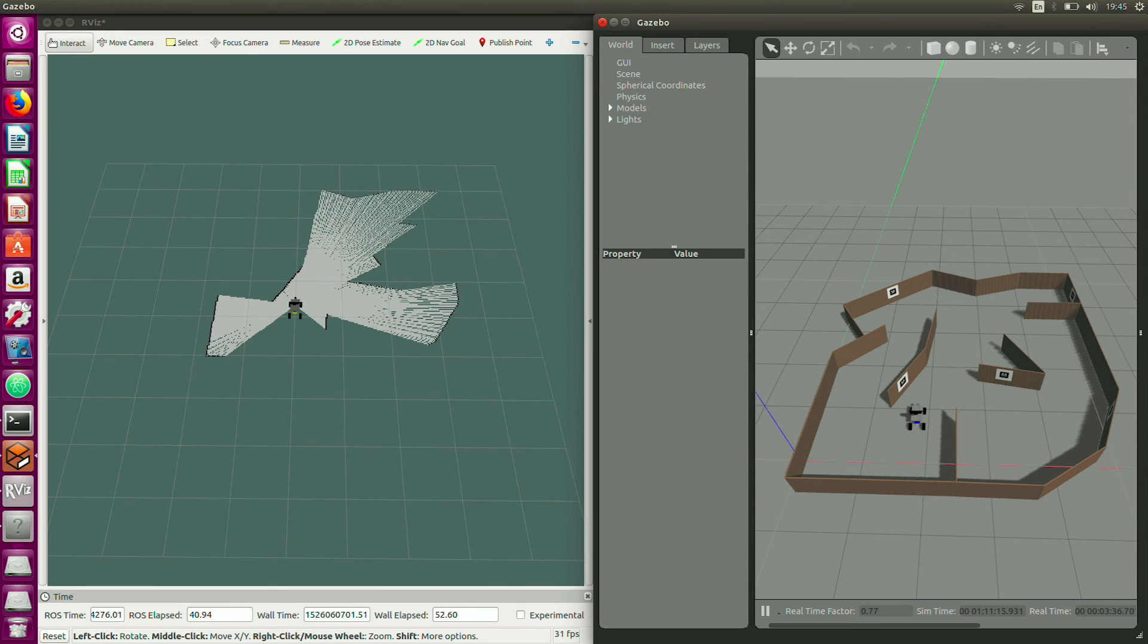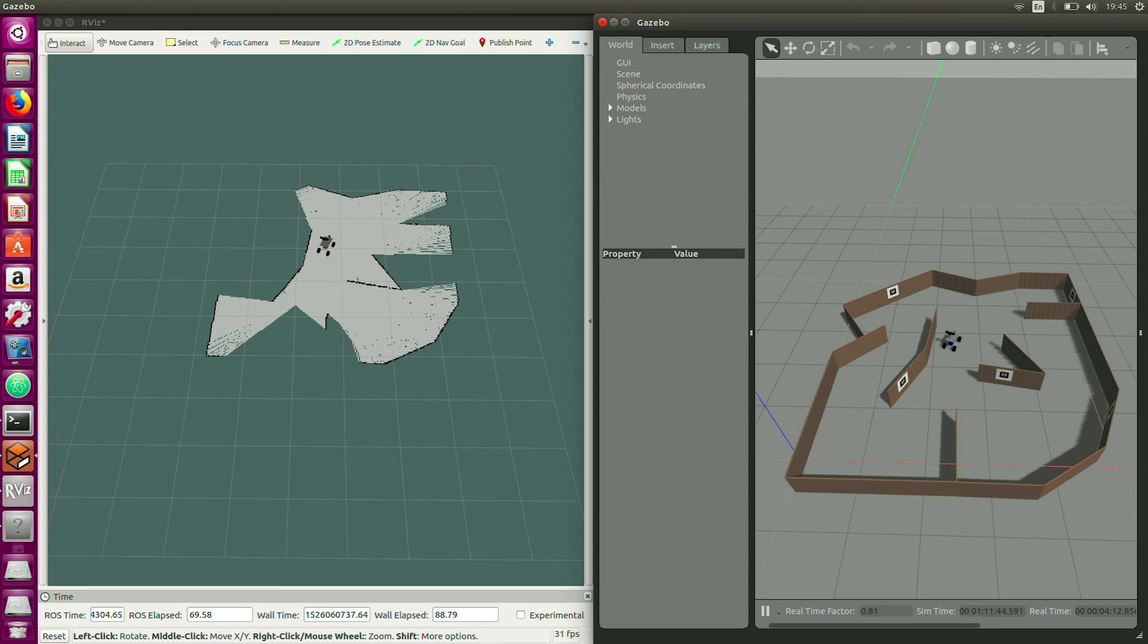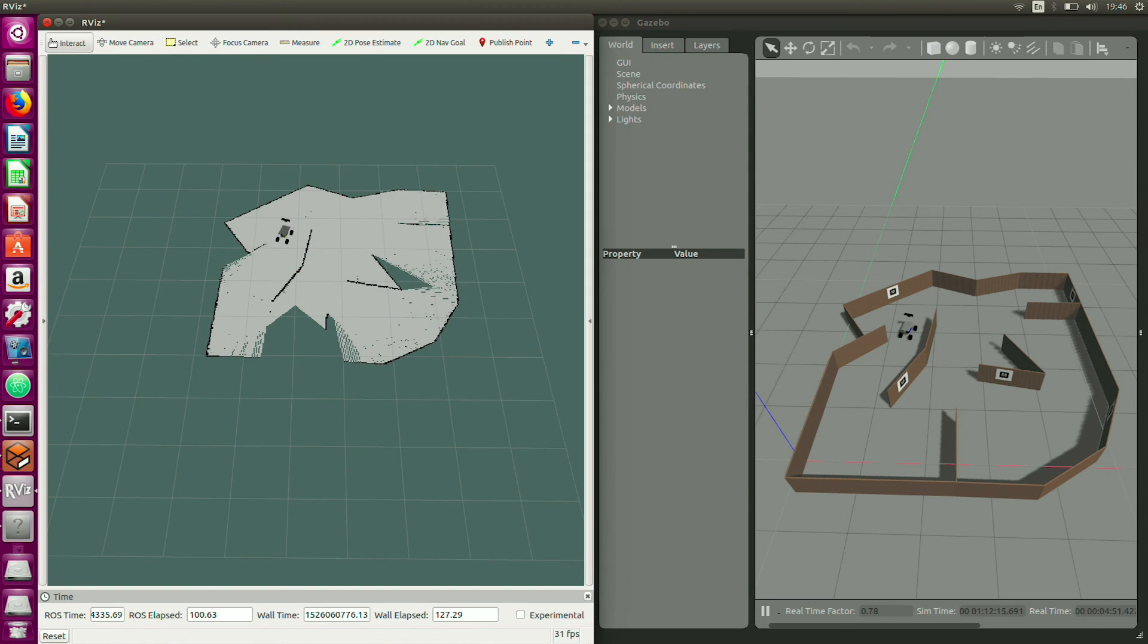We will drive the robot around, and as we go, the map will be created of this environment. We see that as we move, the map is being built.